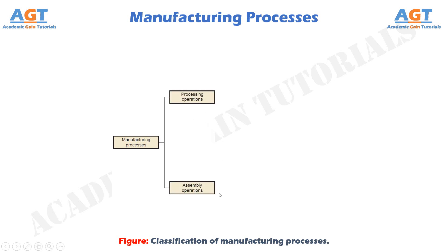Manufacturing operations can be divided into two basic types: processing operations and assembly operations. A processing operation transforms a work material from one state of completion to a more advanced state that is closer to the final desired product. It adds value by changing the geometry, properties, or appearance of the starting material. In general, processing operations are performed on discrete work parts, but certain processing operations are also applicable to assembled items — for example, painting a spot-welded car body.